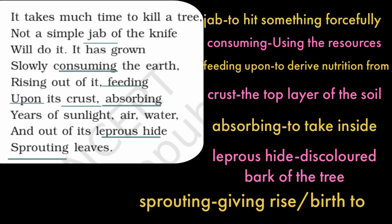In this stanza the poet comments on the way a person cuts down a tree to serve his purpose. The poet says it's not easy to kill a tree — a simple jab of the knife is never enough to wipe out the tree's existence. The tree consumes resources powerfully from the earth's crust, and takes in sunlight, water, air, and nutrients from the soil to gradually become a huge tree.